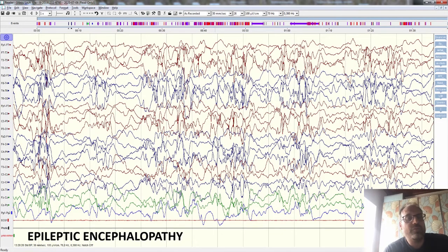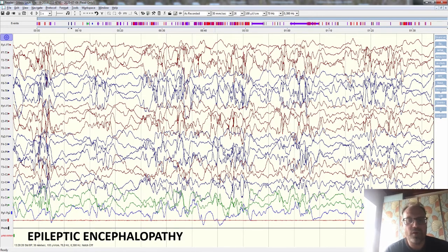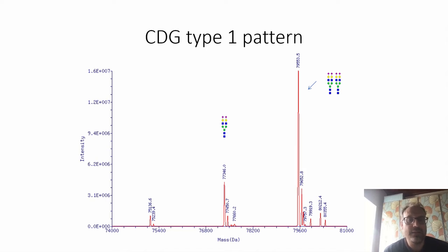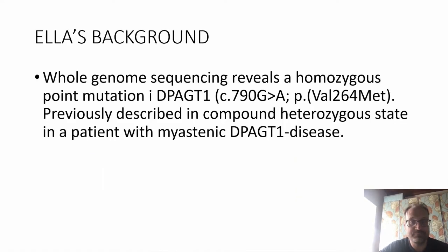At seven months, Ella got seizures — she turned her head and eyes to the left and then had tonic going to clonic movements in her arms. EEG showed epileptic encephalopathy, the MRI of the brain was normal, and she was started on the anti-seizure drug levetiracetam, but that didn't work. She also got phenobarbital, and EEG at that time showed severe pathology — storms of electric activity with attenuation in between, recognized as hypsarrhythmia, consistent with epileptic encephalopathy.